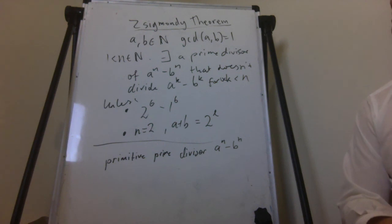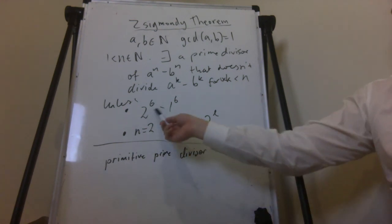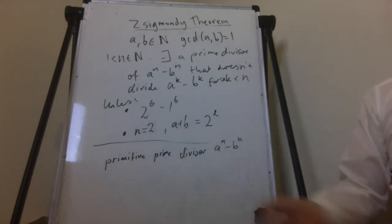So maybe we can check that. So the conclusion fails for this, apparently. If it's 2 to the 6, 63 is divisible by 7, and 8 is divisible by 7. So 7 is not a primitive prime divisor of that.